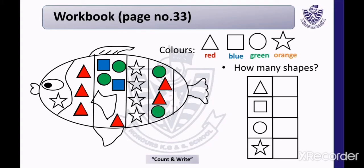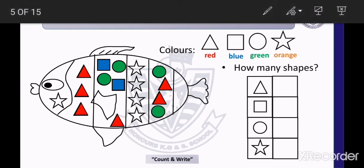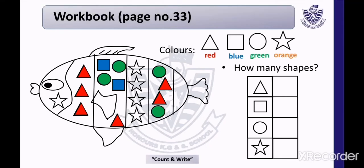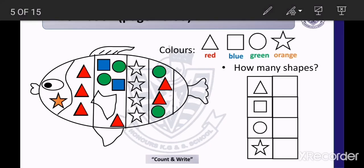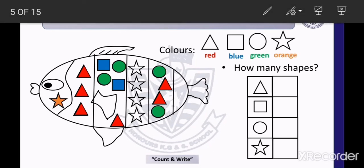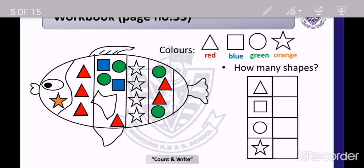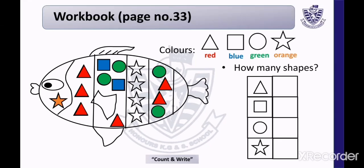Now the next shape is a star. We will color the star with orange color. Similarly, color all the other stars with orange color.